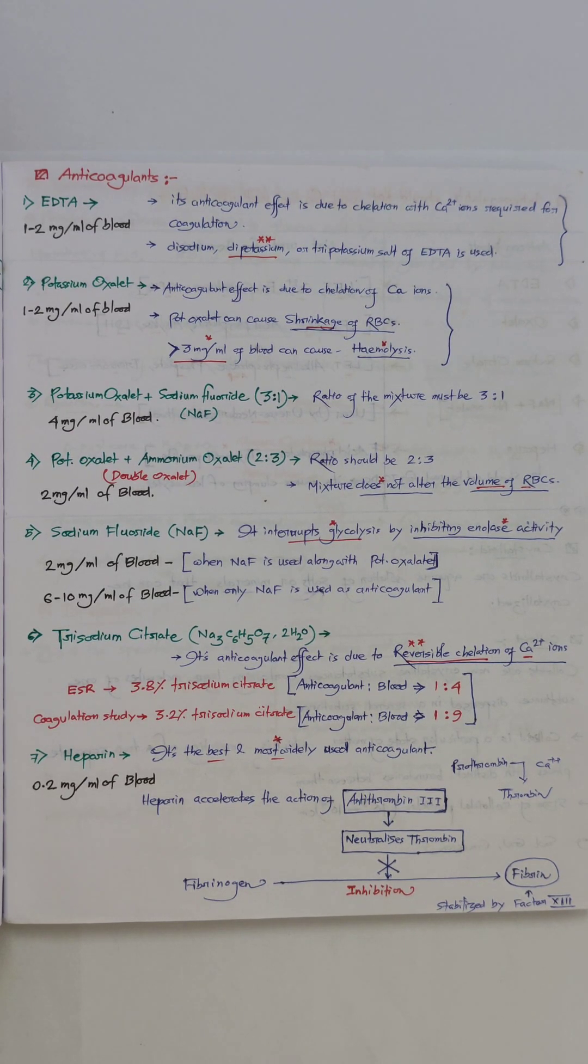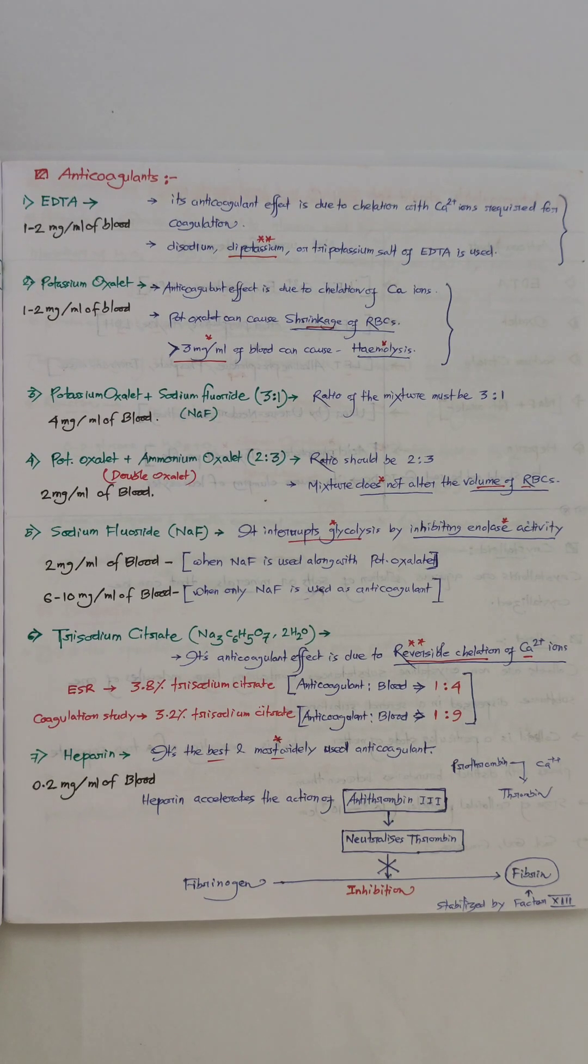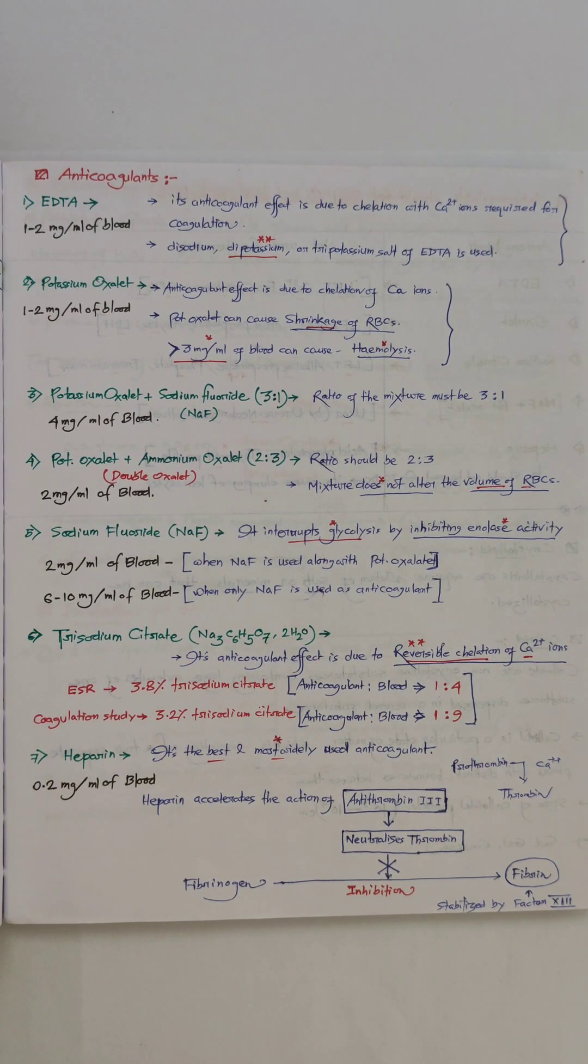Usually trisodium citrate is used for different tests at different percentages. For ESR, 3.8% trisodium citrate is required. For coagulation studies like PT, APTT, D-dimer, and FDP, 3.2% trisodium citrate is required. Here is one thing that is very important: the ratio of anticoagulant to blood.